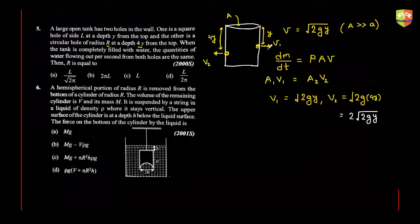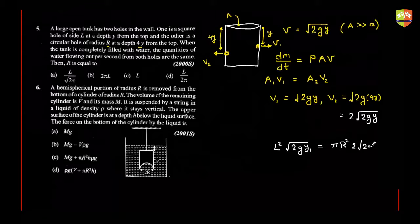Setting a₁v₁ = a₂v₂: the square hole has side length l, so its area is l². Multiplying by v₁ = √(2gy), this equals the area of the circular hole πr² times its velocity 2√(2gy). When you equate them, √(2gy) cancels out, and r comes out to be equal to l divided by √(2π).